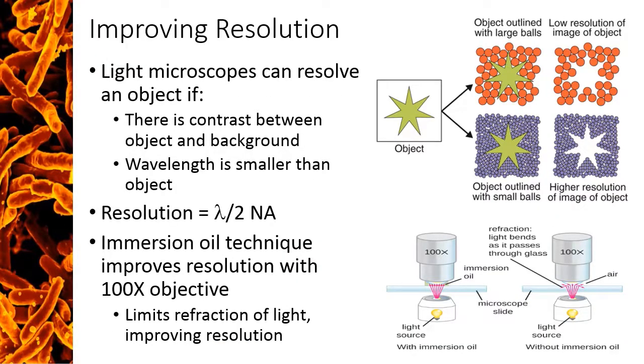Light microscopes are able to resolve objects as long as there is contrast between the object and the background, and the wavelength of light is small enough to pass by the object. The resolution of a light microscope can be calculated by the equation lambda, which is the wavelength, divided by 2 times the numerical aperture. The numerical aperture is a property of the quality of the lens itself, and cannot be changed. So the only variable in this equation is the wavelength of light. The smaller the wavelength, the smaller the resolution, which means the better the resolving power. This is highlighted in the image with the circles and the star.